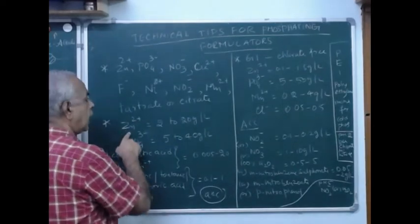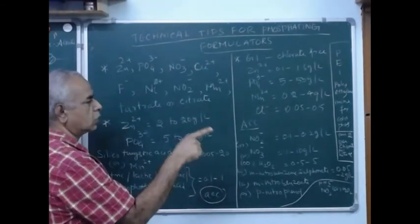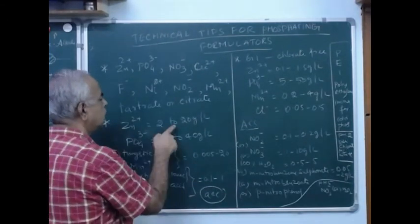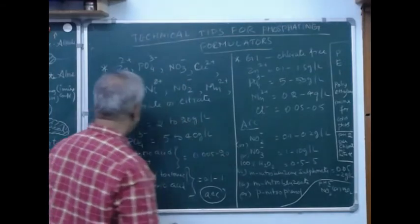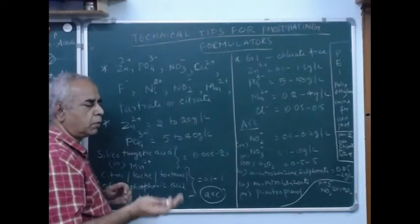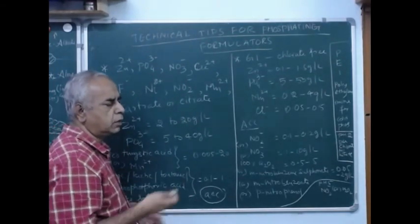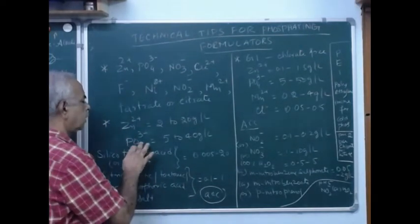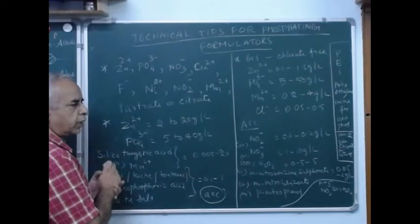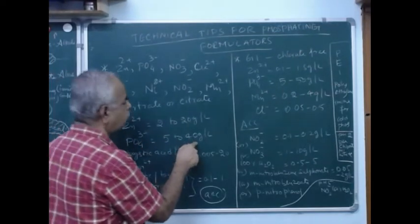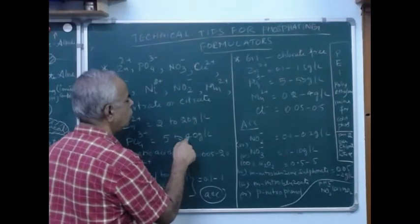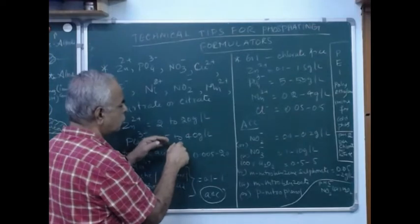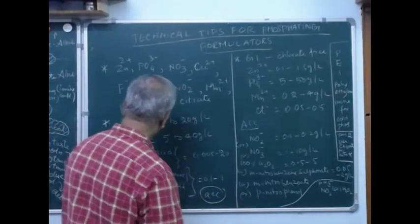Now, zinc as zinc oxide - remember, zinc oxide is a white powder where the zinc content should be 2 to 20 grams. Phosphate means the amount of phosphoric acid (H3PO4), and that content should not exceed 40 grams - that is, 5 to 40 grams per liter. The same proportion should be maintained, almost one-to-two proportions.